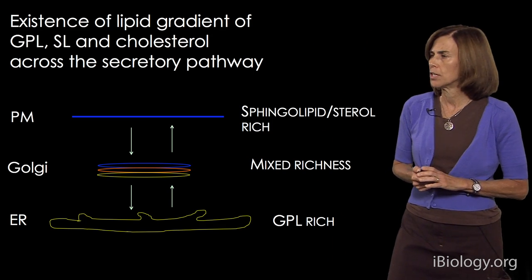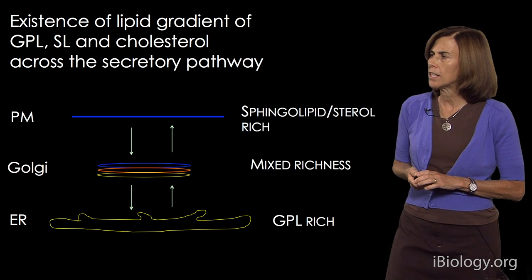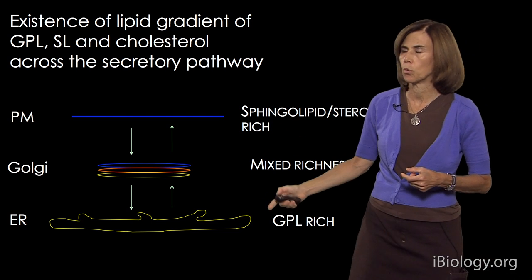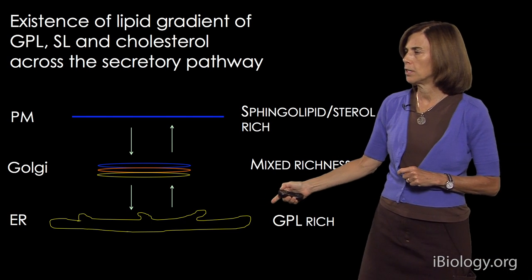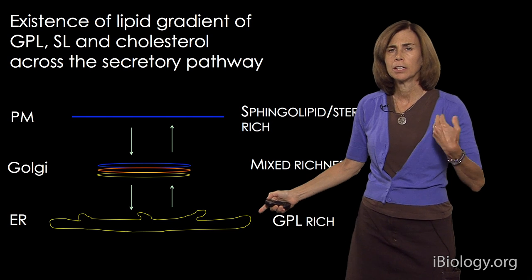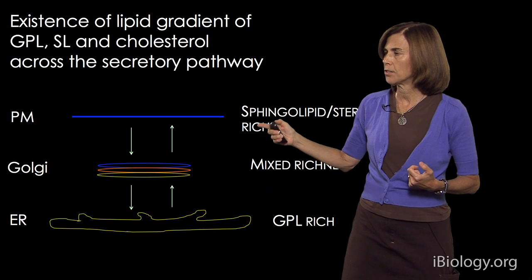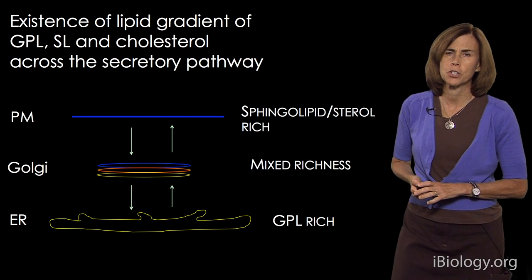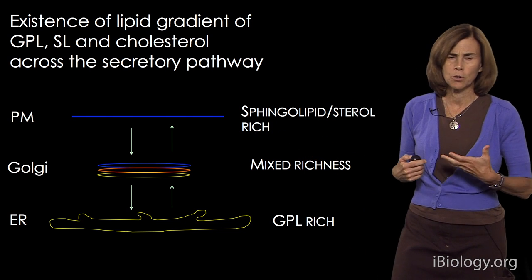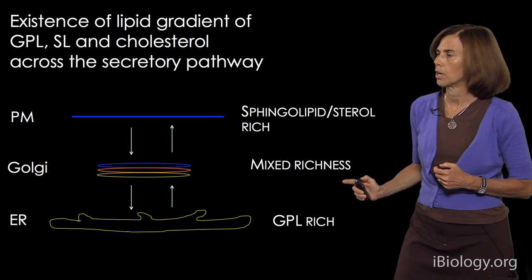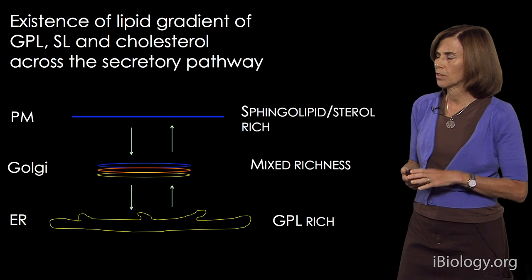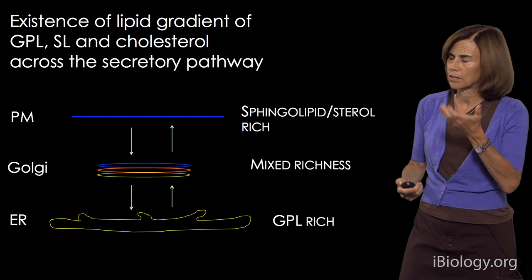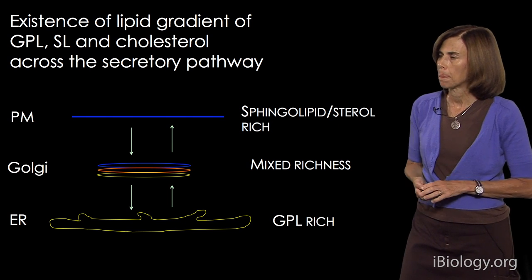Interestingly, there is a known gradient of lipid composition across the secretory pathway. The ER is primarily enriched in glycerophospholipids, in striking contrast to the plasma membrane, which is enriched in sphingolipids and sterols. The Golgi apparatus has a mixed composition — intermediate between the plasma membrane and the ER.